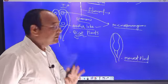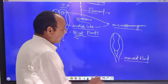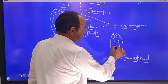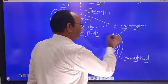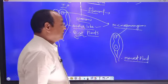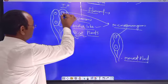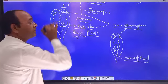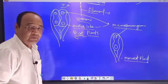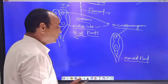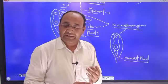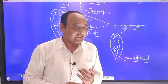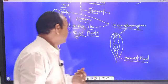In a monothecous anther, two microsporangia are present. But in a dithecous anther, four microsporangia are present. So the concept is clear: monothecous and dithecous correspond to monocot and dicot plants respectively.